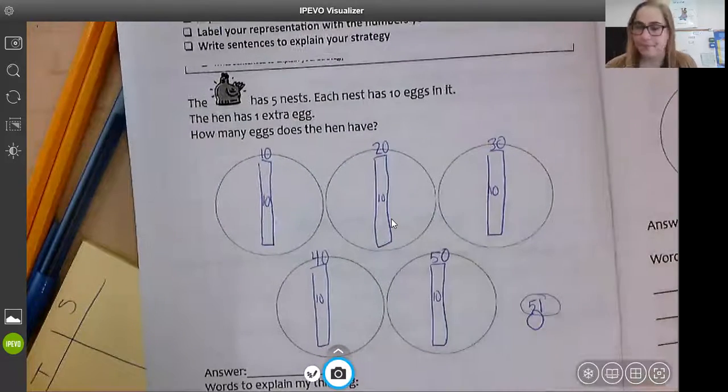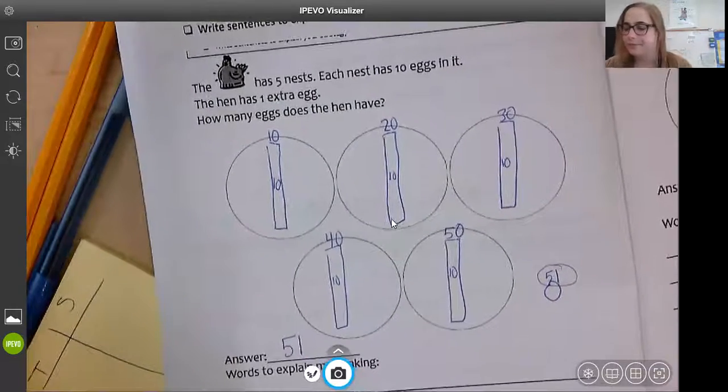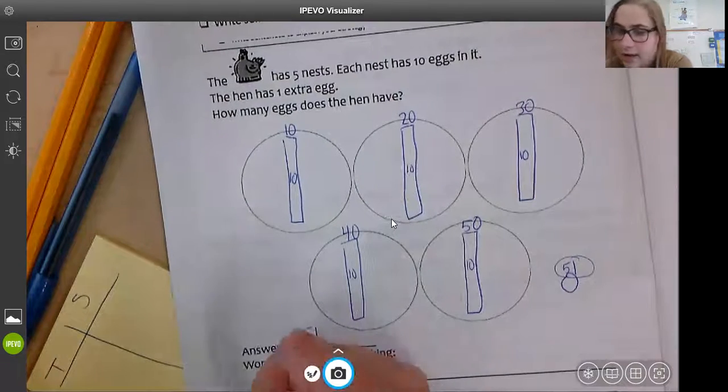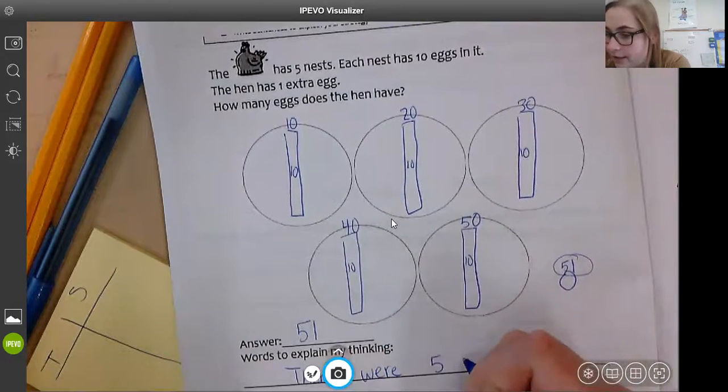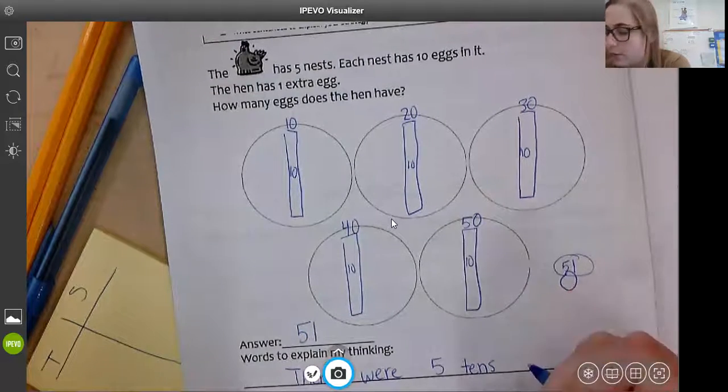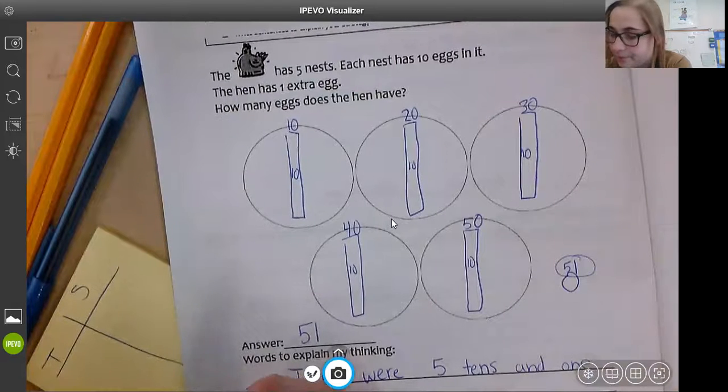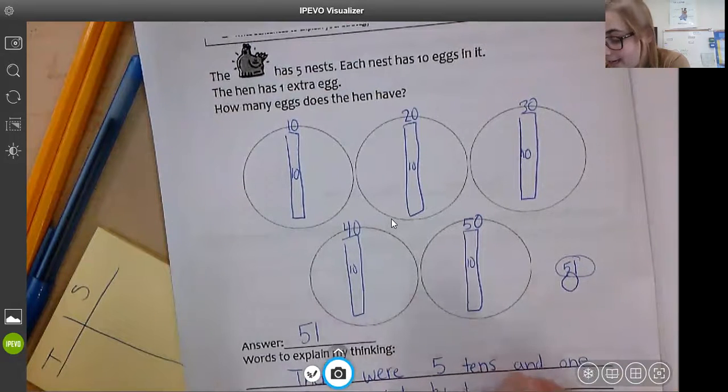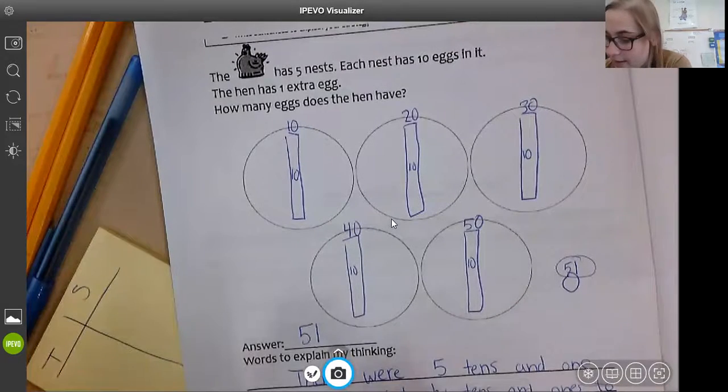I always circle my answer. My answer is 51. Now I can write some words to explain my thinking. I knew that there were five nests with 10 inside, so I know there were five 10s. And there was one extra egg, so that was one one. I counted by 10s and ones to get 51.